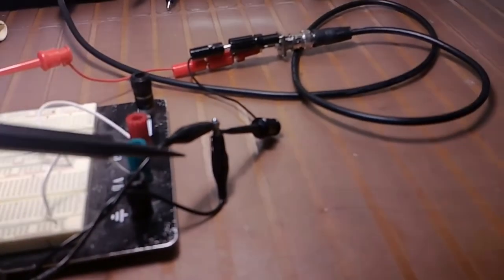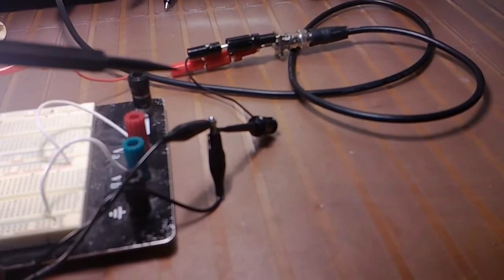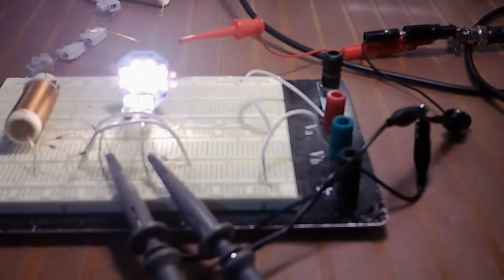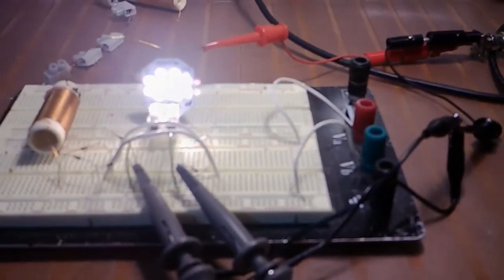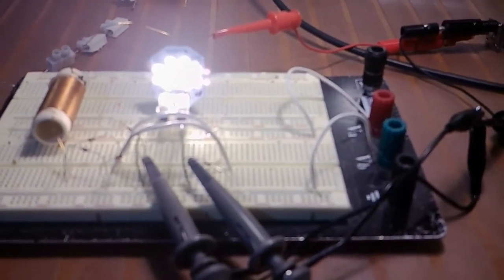I do have both scope probes connected to the ground of the generator. And so basically that's it. This one puts out more light than the full ring.